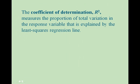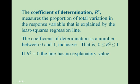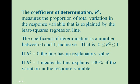The coefficient of determination, often denoted by r squared, measures the proportion of total variation in the response variable that is explained by the least squares regression line. This value will be a number between 0 and 1 inclusive. If r squared equals 0, then the line has no explanatory value. If r squared equals 1, the line explains 100% of the variation in the response variable.